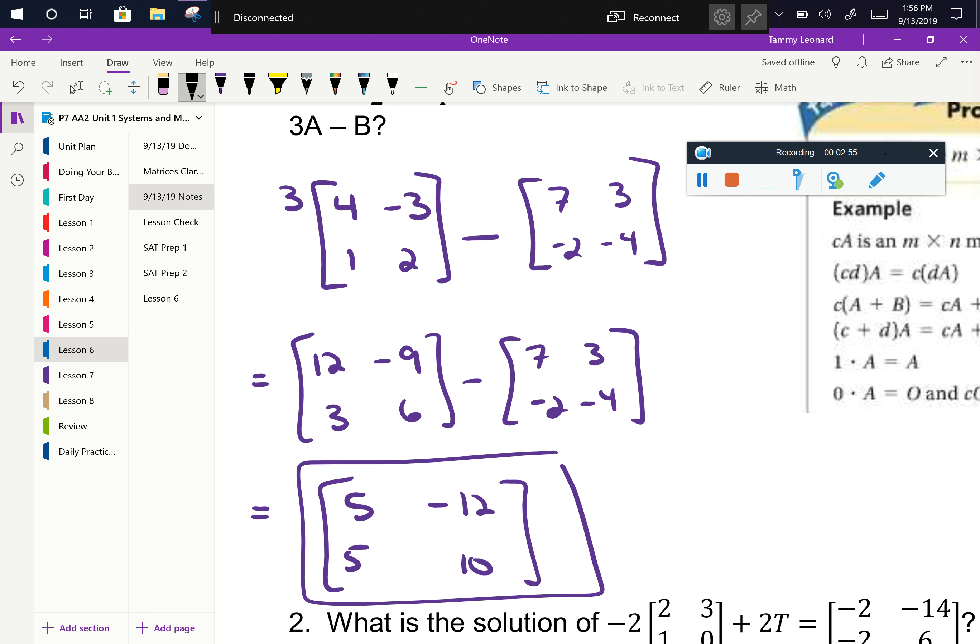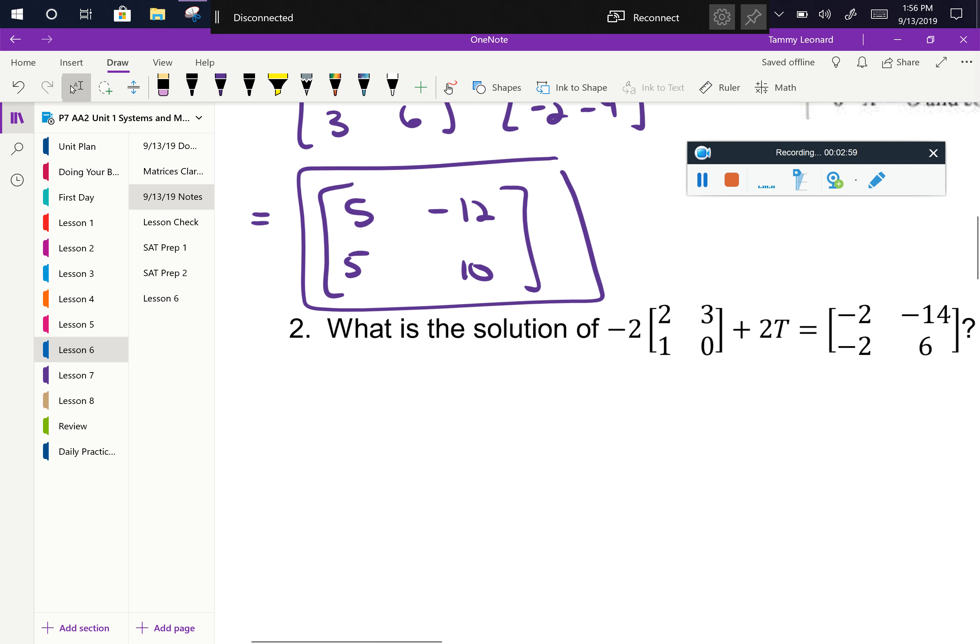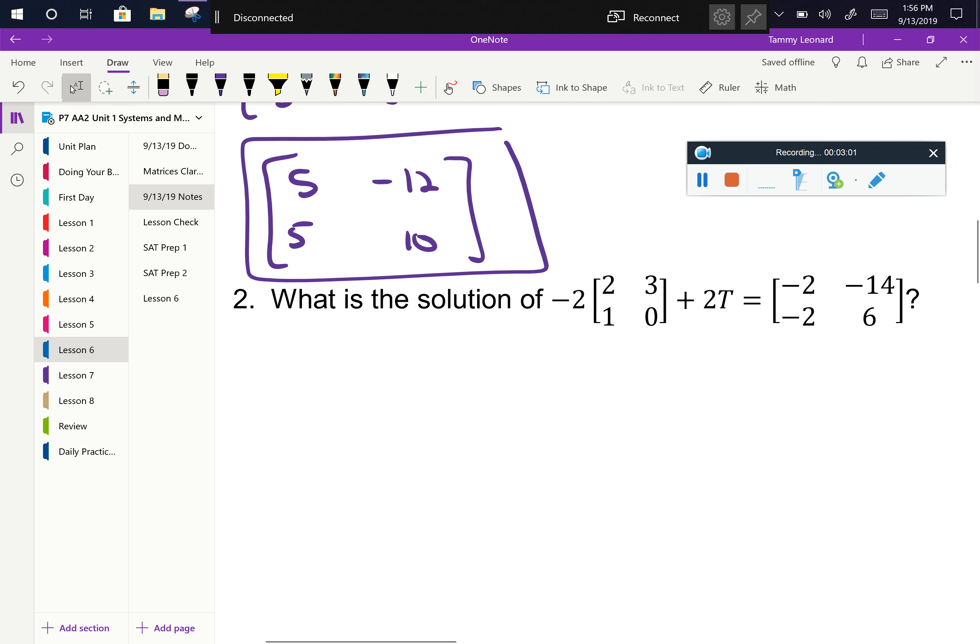So we're going to take a look at the next one, and the next one's still not so bad, but we do start getting into solving a true matrix equation. So in our last lesson, we saw when there was a variable inside the matrix, and we could just sort of set up a side equation and use that little equation to solve and find out what the variable was. This is a little different, because the unknown is an entire matrix.